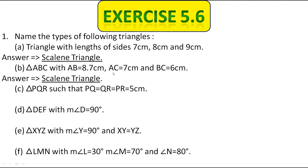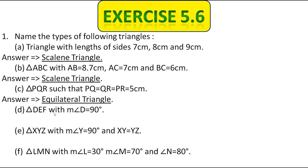Next, triangle PQR such that PQ = QR = PR = 5 cm. All the sides are of equal length, therefore it is called an equilateral triangle. Next, triangle DEF with angle D = 90 degrees. Since one angle of this triangle is 90 degrees, it is called a right angle triangle.